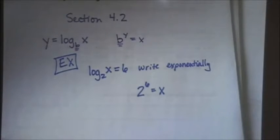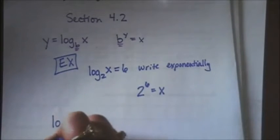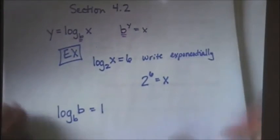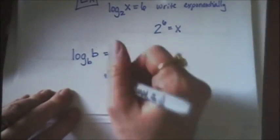There's a couple of other properties that you might need to know. For example, if you have log base b of b, this automatically equals 1. So if I have log and the base and the argument are the same, it always equals 1.